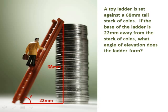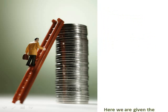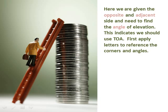If you have difficulty or would like to view the solution, restart the video. Here we are given the opposite and adjacent side and need to find the angle of elevation. This indicates we should use TOA. First apply letters to reference the corners and angles.